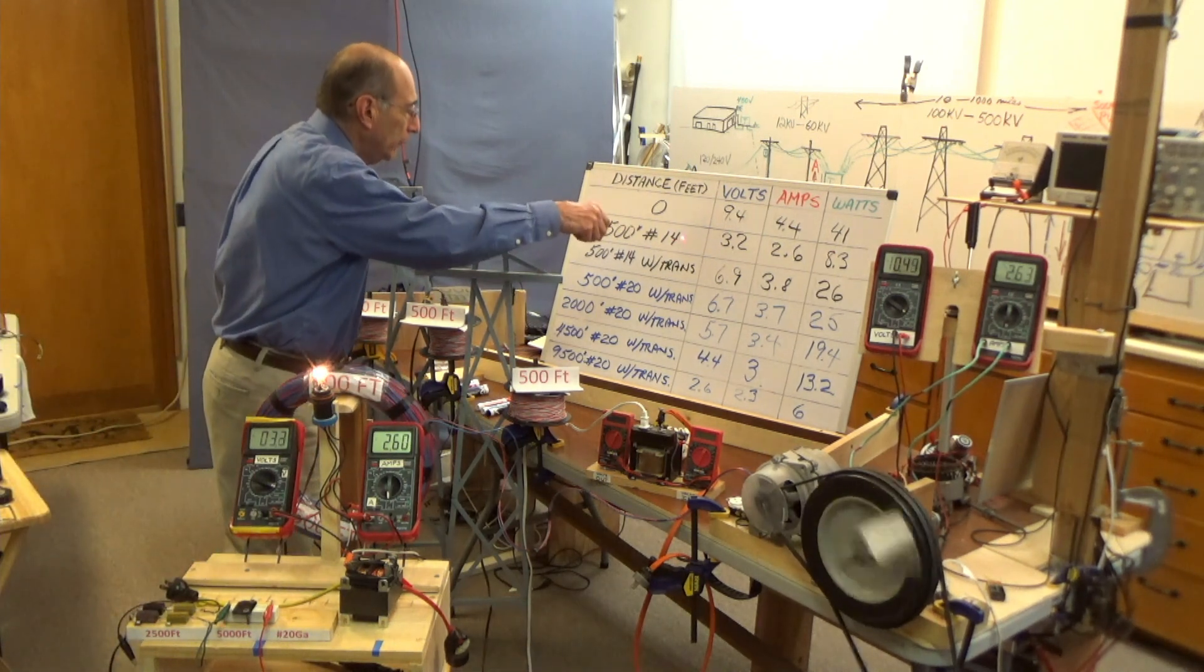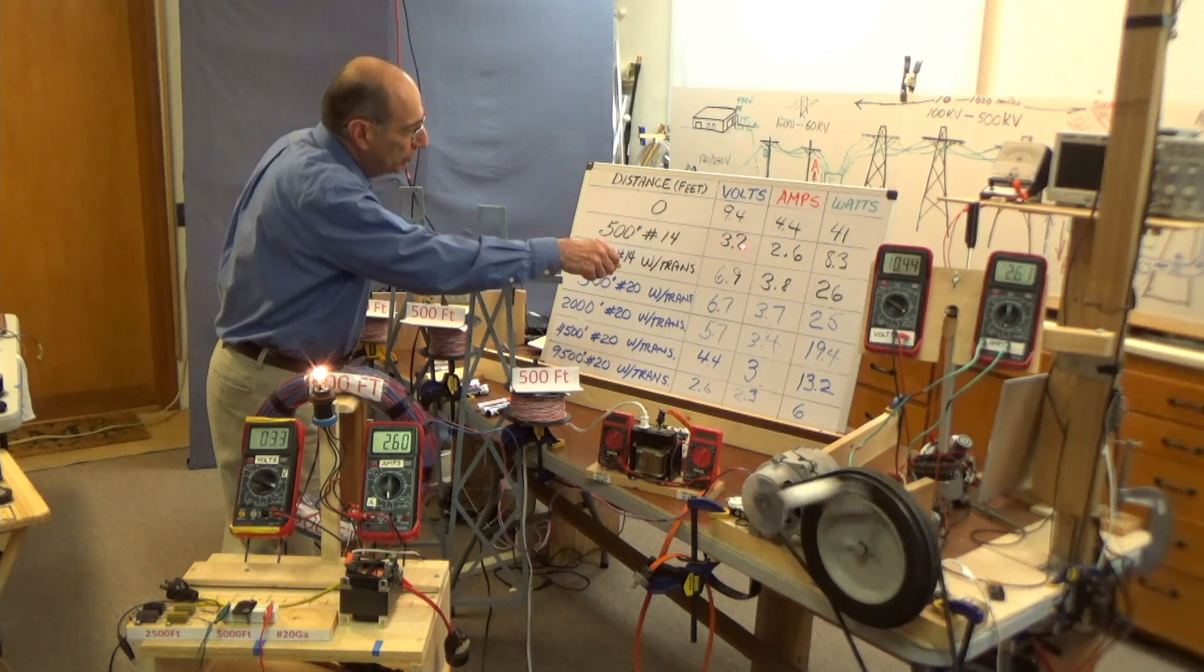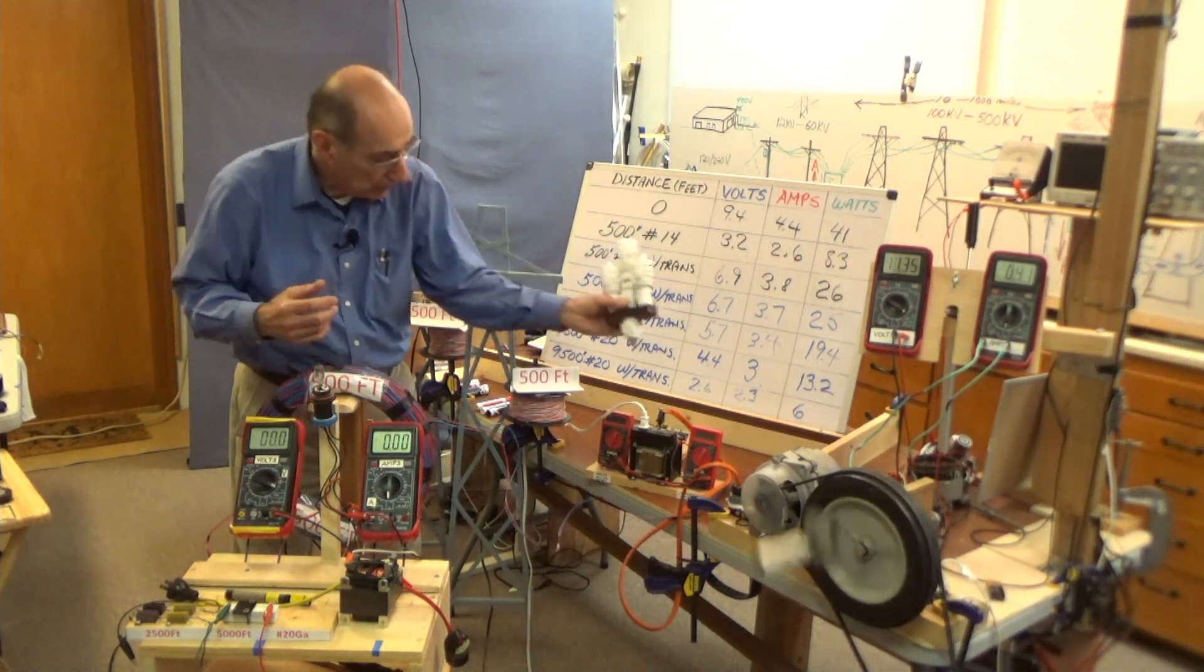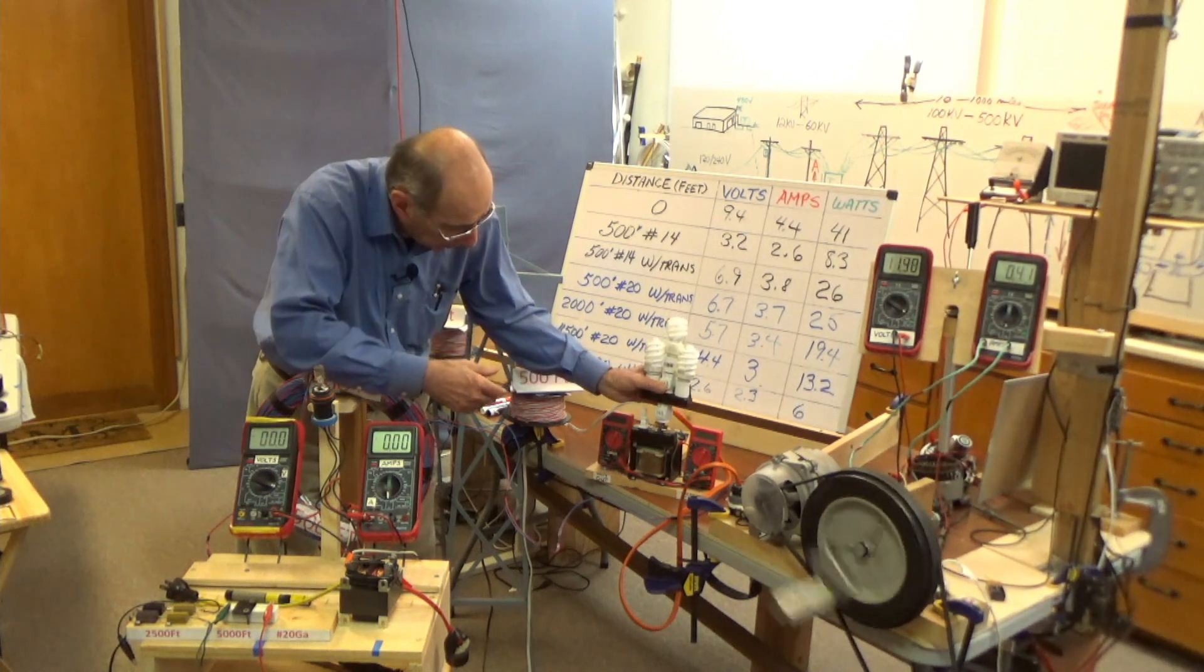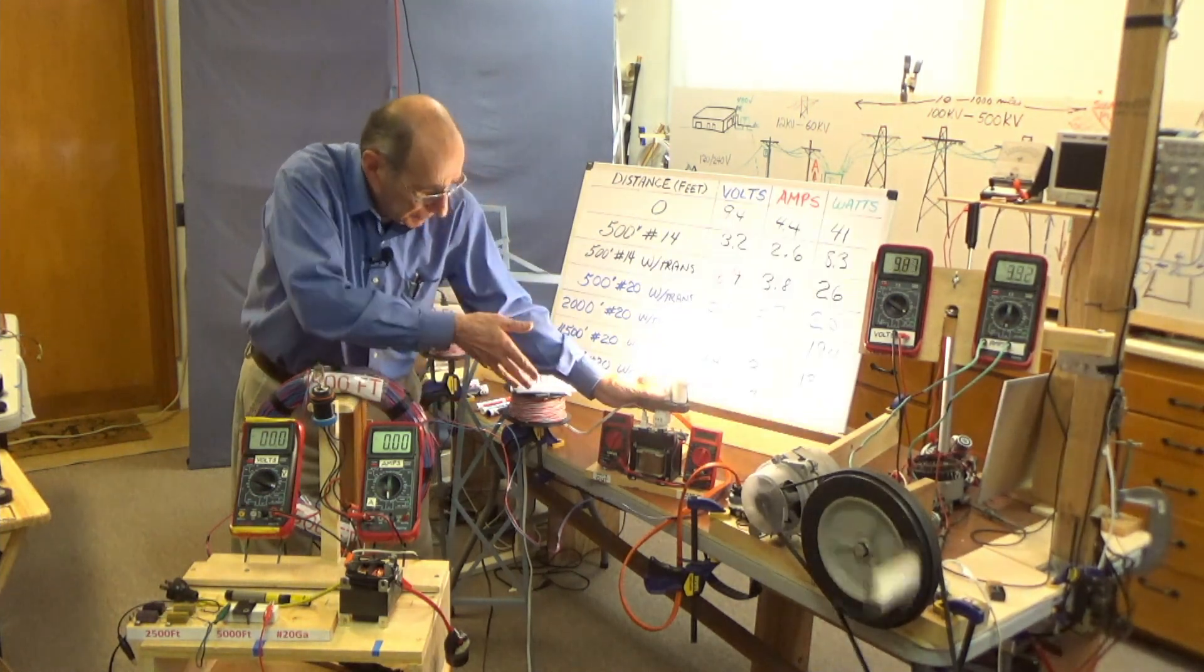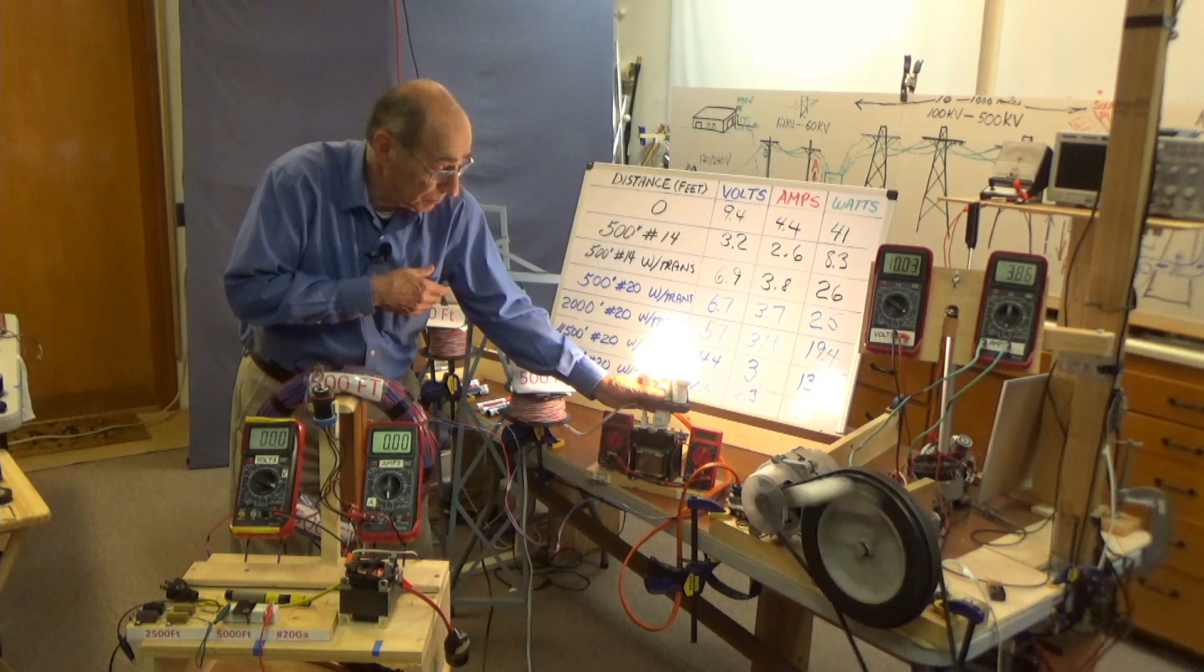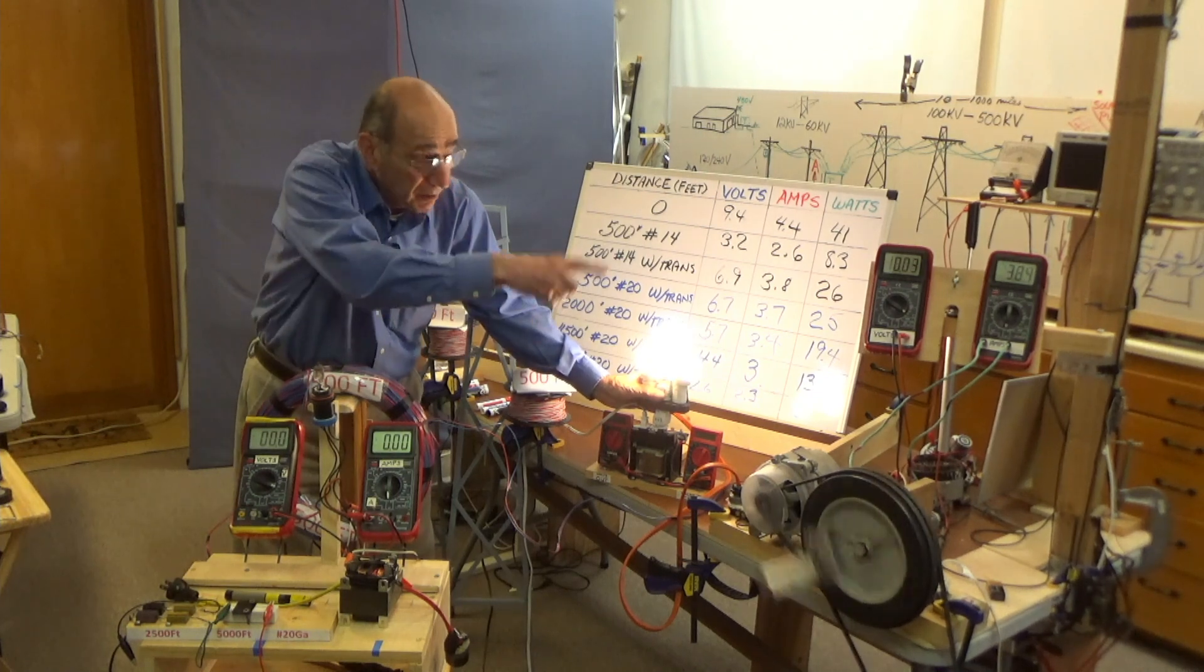500 feet of number 14 wire, 3.2 volts, 2.6 amps. Now I've measured what's going on here before. So that's about 90 volts are lighting these up. So we've got about a 10 to 1.